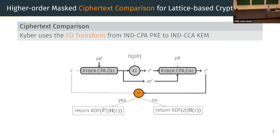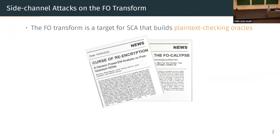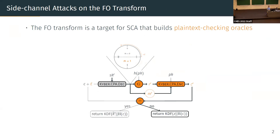Over the last year it has become quite clear that the FO transform is a popular target for side-channel analysis. Some papers on this topic have catchy names, and one is presented at this session at CHES. The key point is that the attacker can submit a completely random ciphertext, in which case the re-encryption and the submitted ciphertext won't match at all.